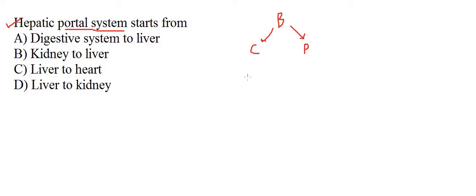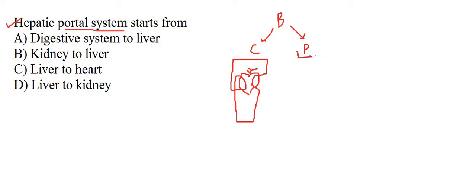In the Circulatory System, the heart pumps blood through the body and back to the heart. In the Portal System, blood flows from one capillary area to another capillary area — that is what we call the Portal System.